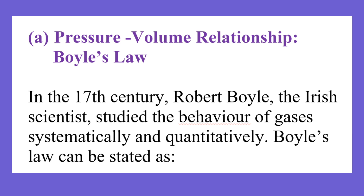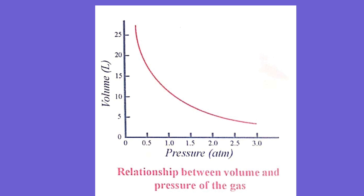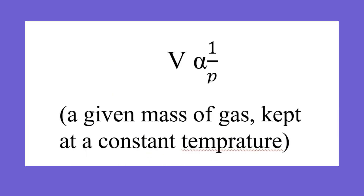When the temperature of a given mass of gas is kept constant, the volume of the gas is inversely proportional to its pressure. The mathematical expression is: V varies as 1/P, for a given mass of gas.